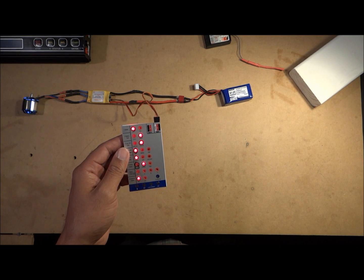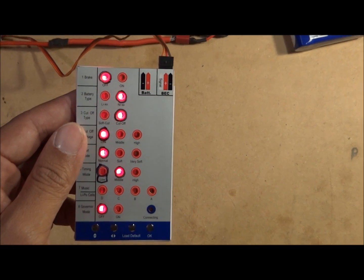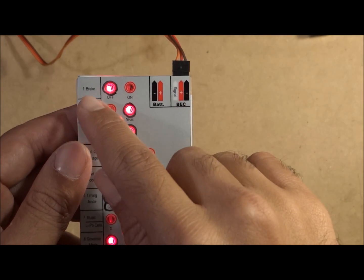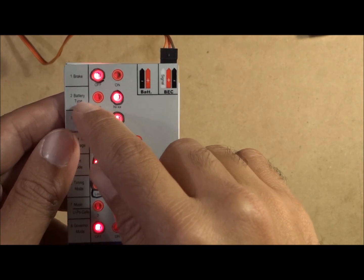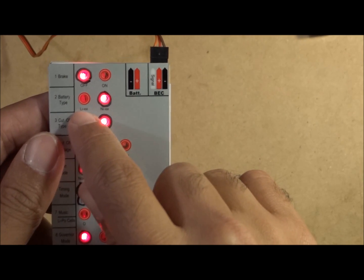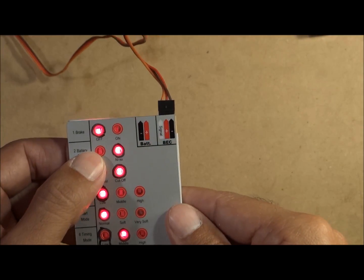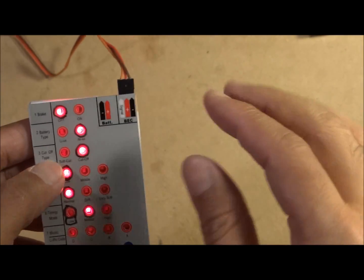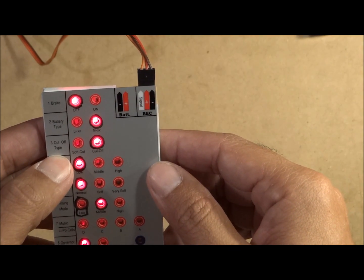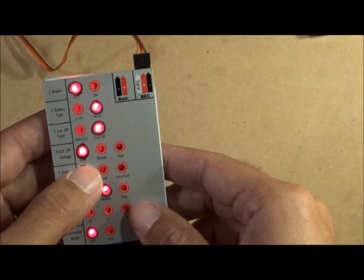For multirotors, you want to have the brake off. Battery type - you want it in NiCAD/NiMH, as it says right there. You don't want LiXX - that means lipo. Because a lot of ESCs they have a lipo cutoff, and once the voltage hits that low, everything just shuts off and your copter is just gonna fall out of the sky. Cutoff type - you don't want it on soft or medium, you just want to leave it off. That means cutoff. Voltage cutoff - you'd want that low.